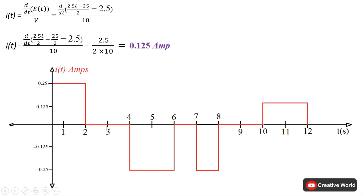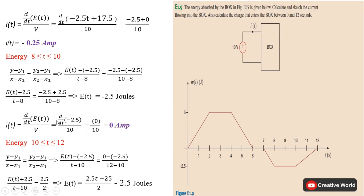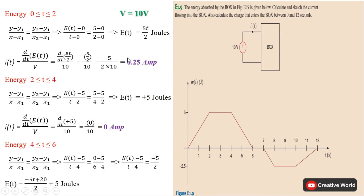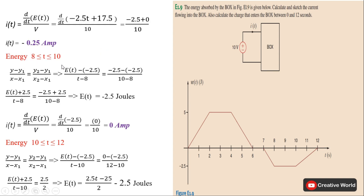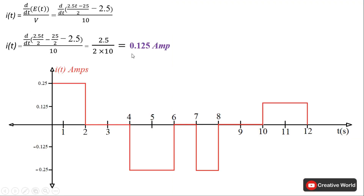Now plotting the values on the graph: from 0 to 2 we have 0.25 ampere; from 2 to 4, 0 ampere; from 4 to 6, minus 0.25 ampere; from 6 to 7, 0 ampere; from 7 to 8, minus 0.25 ampere; from 8 to 10, 0 ampere; from 10 to 12, 0.25 ampere. This plotted graph is a little different from the answer given, and we can confirm it is correct by calculating the charge.